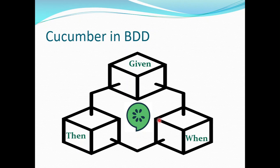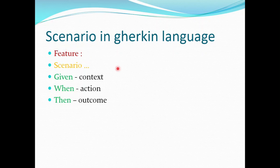To answer that, Cucumber has provided us with a few keywords using which we can design the scenarios in simple English language called Gherkin. The most commonly used keywords out of all are Given, When, and Then. And in the feature file, the scenario always starts in this format.